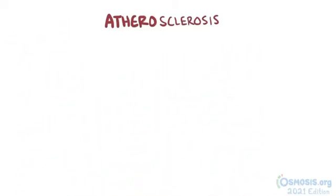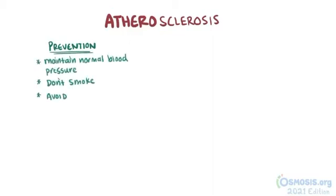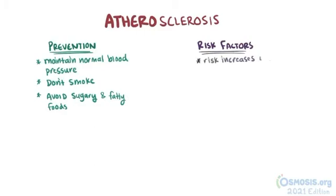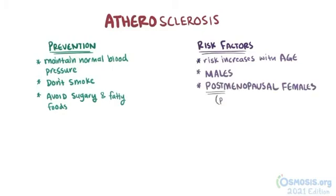Atherosclerosis isn't great, but there are a few things you can do to prevent it. Maintaining a normal blood pressure and avoiding excessive sugary and fatty foods and drinks all reduce your risk. There are other risk factors that may be out of your control though — you're more likely to get atherosclerosis as you get older. Males and postmenopausal females are also more prone to the disease, but premenopausal females are less at risk because higher levels of estrogen have a protective effect against atherosclerosis. People who have a family history with atherosclerosis are also more at risk.